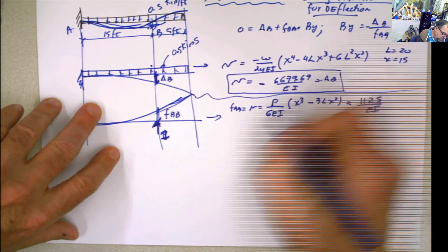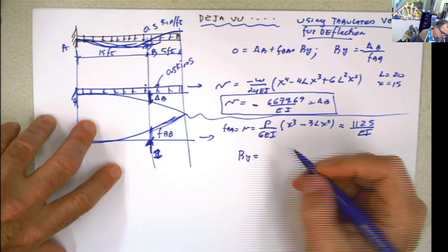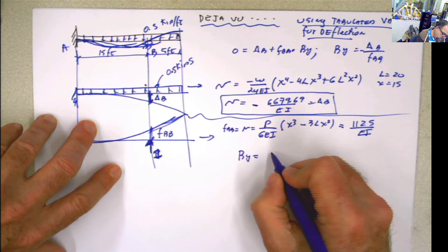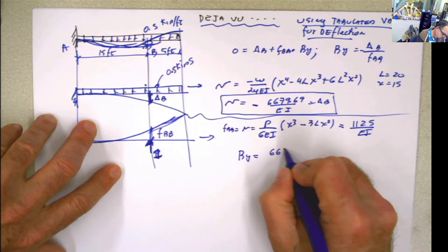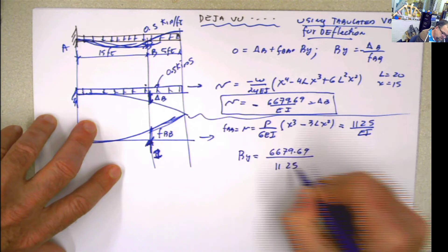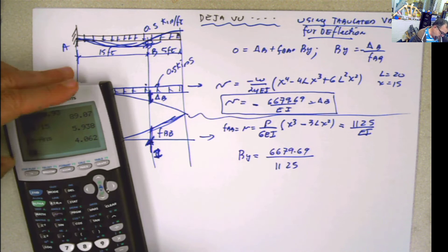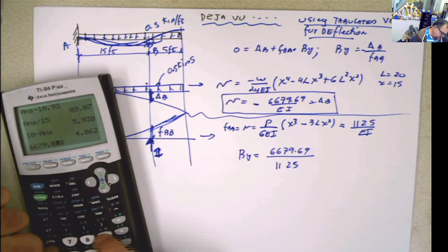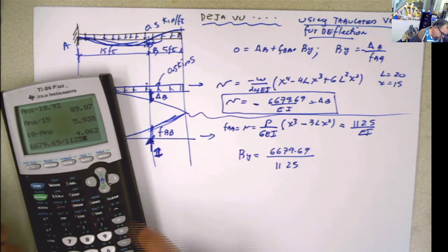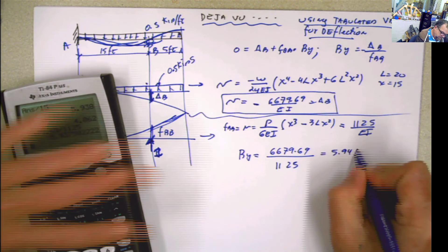And now, what do you have to do? Calculate By. And By is going to be equal to what? By is going to be equal to 6679.69 divided by 1,125. EI and EI cancel each other out. And now we have 6679.69 divided by 1,125, 5.94 kip.